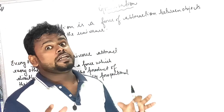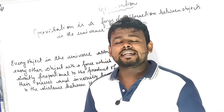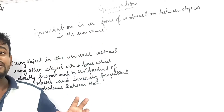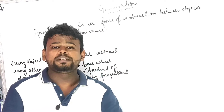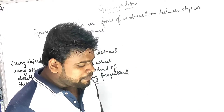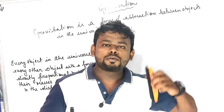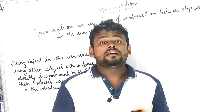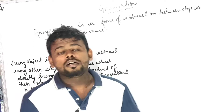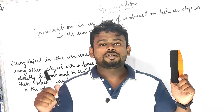So let us understand the definition of gravitation. Gravitation is the force of attraction between objects in the universe. For example, this duster and this marker — these are two objects. So by definition, gravitation is the force of attraction between objects.